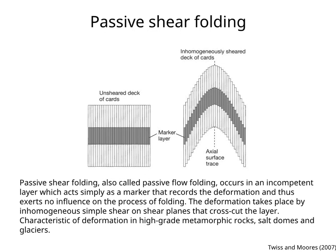and thus exerts no influence on the process of folding. The deformation takes place by inhomogeneous simple shear on shear planes that cross-cut the layer. This type of deformation is characteristic of high-grade metamorphic rocks, salt domes, and glaciers.